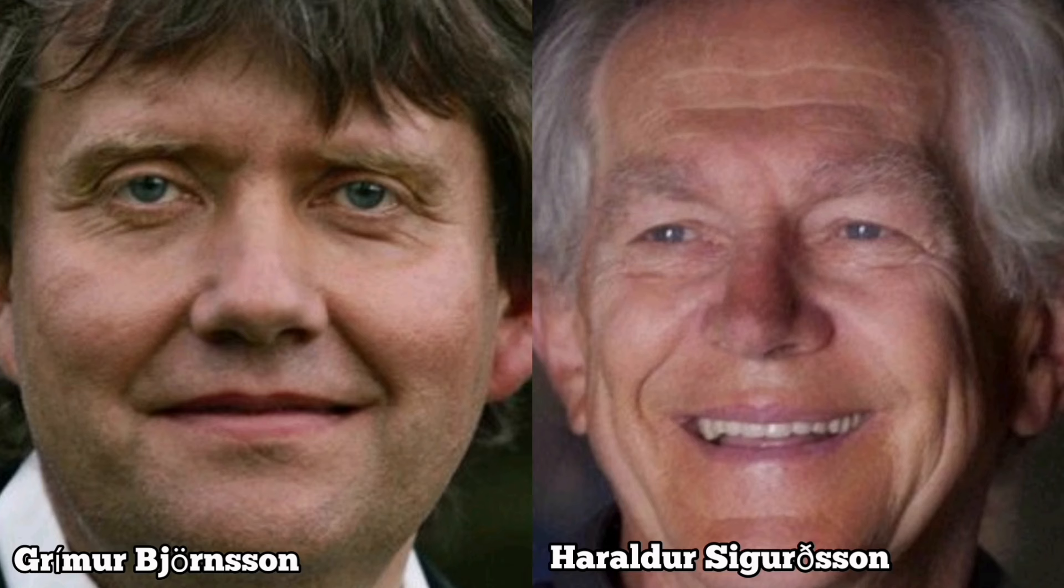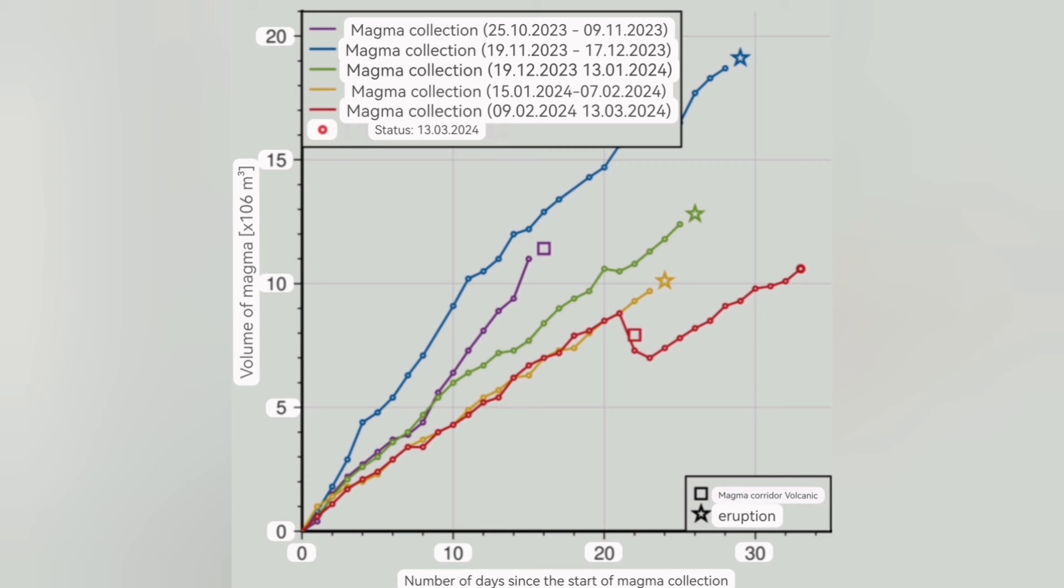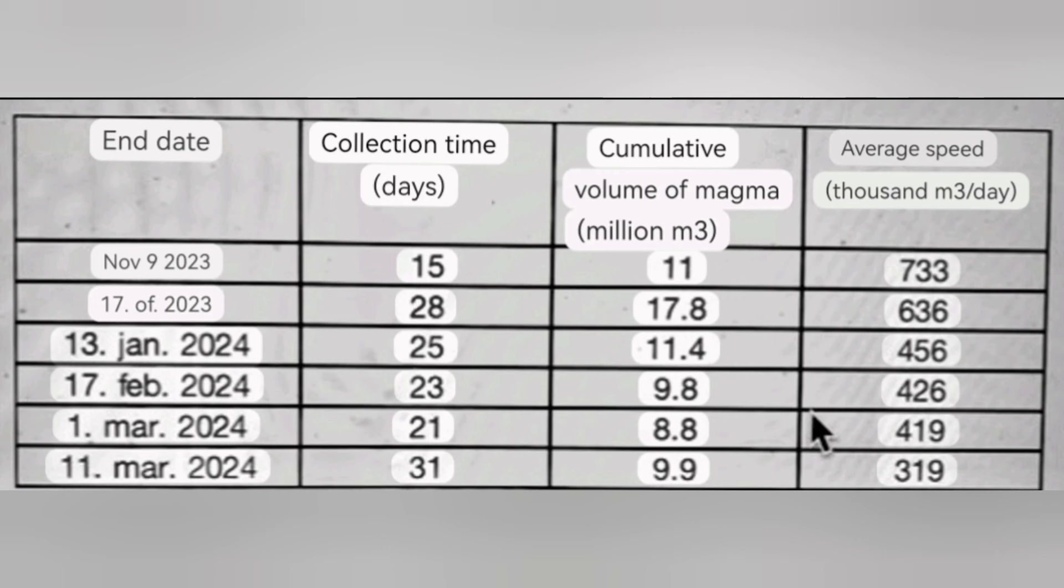Very simple. It shows what the Icelandic Meteorological Office have provided in the numbers of the days past since accumulation of the magma started to the time that it erupted. So cumulative volume of the magma is in the third column, and the collection time for that magma to gather under the source volcanic system is in the second column.